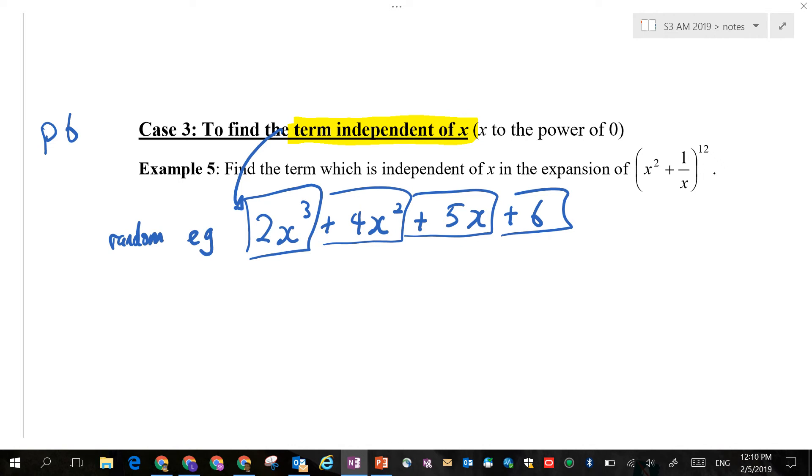This will be x 10 squared, 100. 100 times 2 will be 400. Is this dependent on x? Yes. So, can you write down? These three terms are dependent on x.